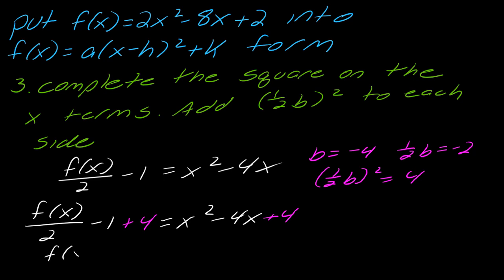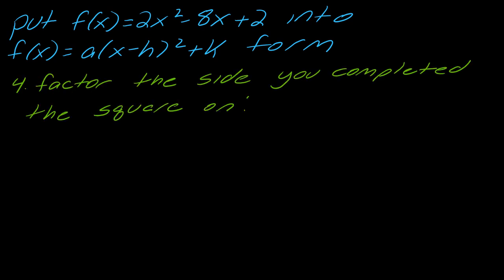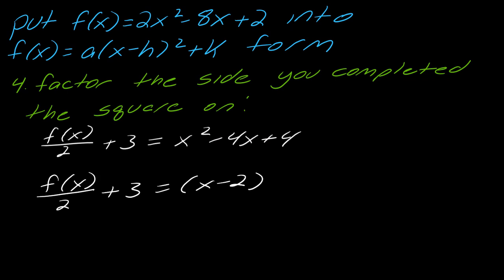This is going to be f(x) over two plus three. Once you've completed the square, you want to go ahead and factor the side that you completed the square on. My equation is this, and if I factor this as a perfect square, this is going to become: f(x) over two plus three equals x minus two squared.